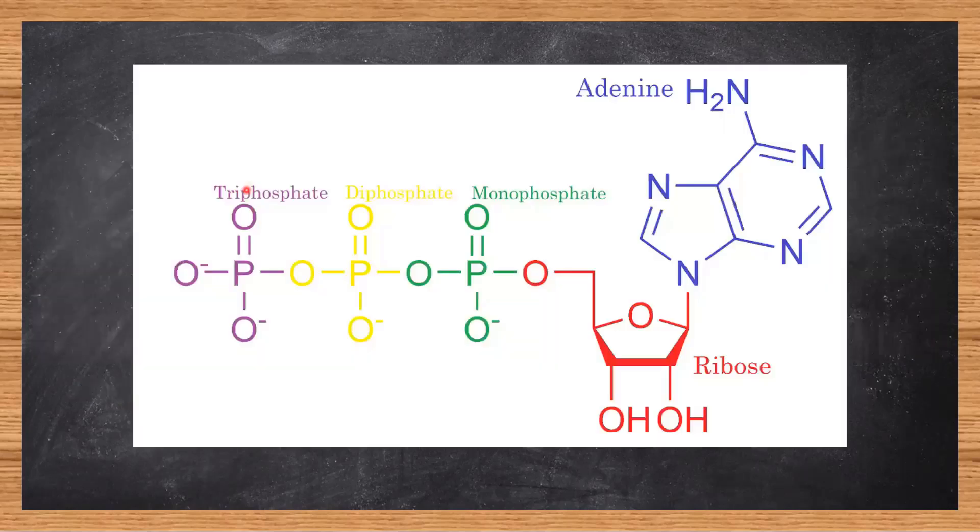This is how a typical nucleotide looks. Here is the structure of ATP, adenosine triphosphate. We basically have the ribose sugar, the nitrogenous base, and the triphosphate. These are the building blocks of your DNA.